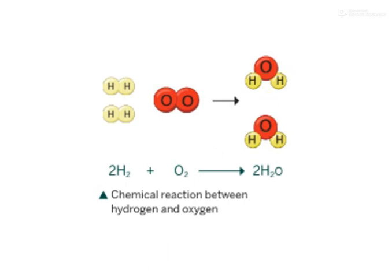These four atoms of hydrogen and two atoms of oxygen rearrange themselves and form two molecules of water with the help of a chemical bond. Therefore, before and after the chemical reaction, the total number of atoms of each kind in the original substance and in the new product remains the same — the number of reactants and products will be the same.